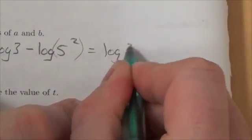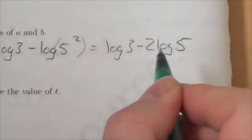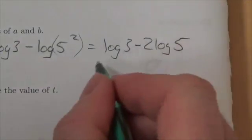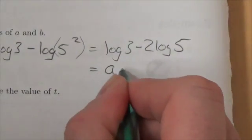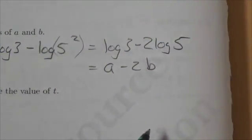The log of 3 minus, I can bring a 2, that exponent out front. And so now I've got the log of 3 minus 2 log of 5. And now I can make that substitution. Well, that's just A minus 2B. Because now I am looking at just the log of 5.